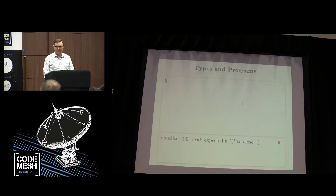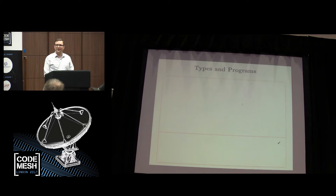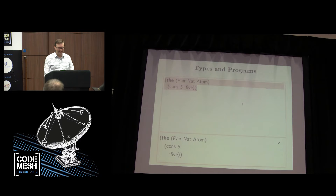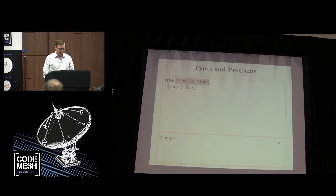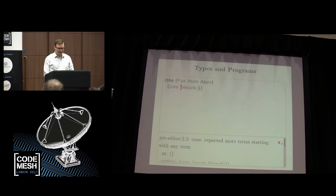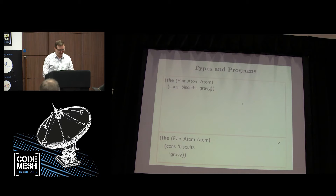Likewise, atom and nat are themselves programs. So I can type in nat, and we see what kind of program is that? Well, that's a type, because it's the kind of program that describes other programs. We have more interesting types than just nat and atom. So I could say 'the pair nat atom', and then say 'cons four five'. And we get our green checkmark, everything's A-OK. I can even say 'pair atom atom' and come back and say 'biscuits and gravy' — which means something very different in the United States than it means in the UK, by the way.